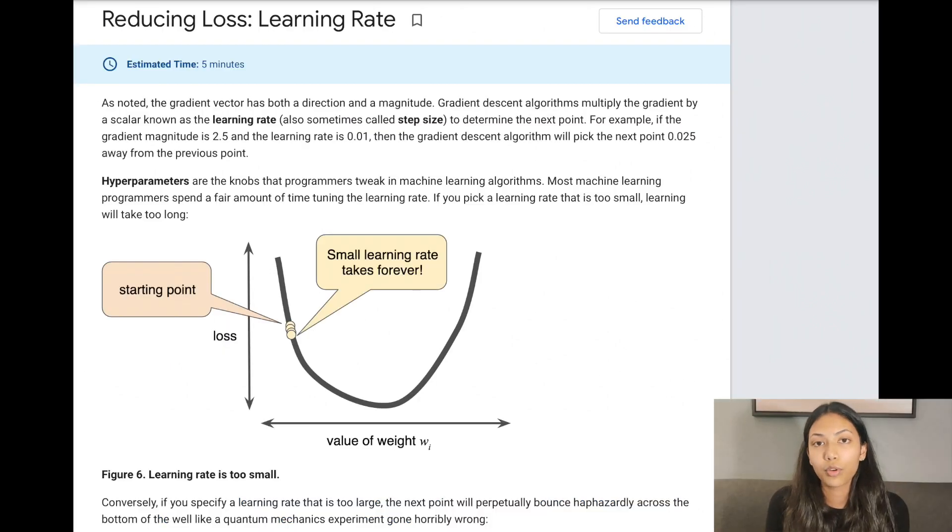So learning rate, also sometimes called the step size, is what actually determines how much you change your w values by. So when you finally have your negative gradient and you see that your loss is decreasing, how much do you actually change your w values? That's determined by the learning rate. So for example, if your gradient is 2.5 and your learning rate is 0.01, then the gradient descent algorithm actually multiplies these two values together and you would get 0.025. So what happens is it adds that to your weight values. It adds 0.025 to your weight values and then it puts these new weight values into your algorithm in order to find the new loss and you would actually approach a lesser loss.